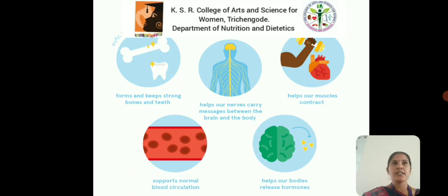Calcium acts as an intracellular messenger. Certain hormones exert their action through the mediation of calcium, and calcium is regarded as a second messenger for such hormonal action. For example, epinephrine in the liver glycogenolysis. It releases hormones such as insulin, PTH and calcitonin from the endocrine glands, mediated by calcium ions. It has a contact inhibition role and is believed to involve in cell contact and adhesion of cells in a tissue.